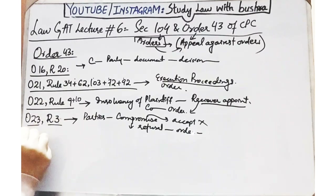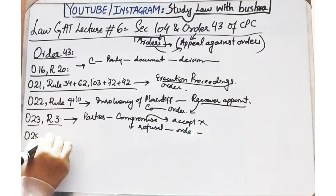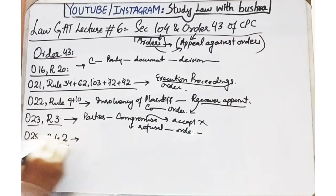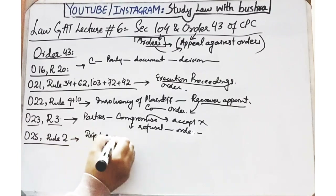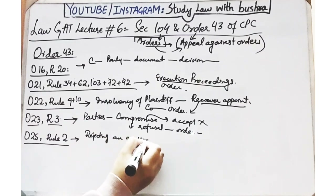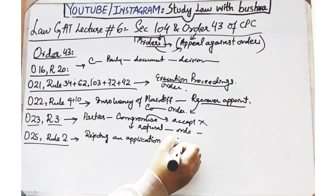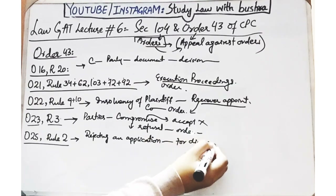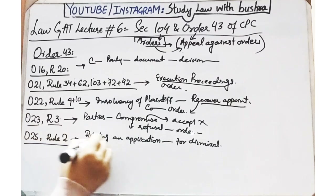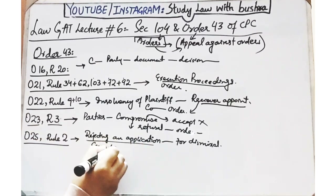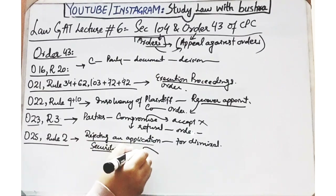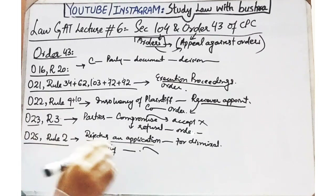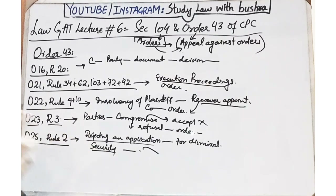Order 25 Rule 2 - rejecting an application on the dismissal of the suit. Isme yeh kaha gaya hai ke agar koi banda hai aur uska suit yahan Pakistan mein chal raha hai lekin woh out of country hai aur Pakistan mein uski kisi kism ki koi property bhi nahi hai, to agar plaintiff court ko kehta hai ke aap isse koi security to len, in case agar woh court mein appear nahi hota to at least koi security to honi chahiye - to yeh jo security court us bande se demand kar rahi hai, is order ke against bhi appeal file ki ja sakti hai.